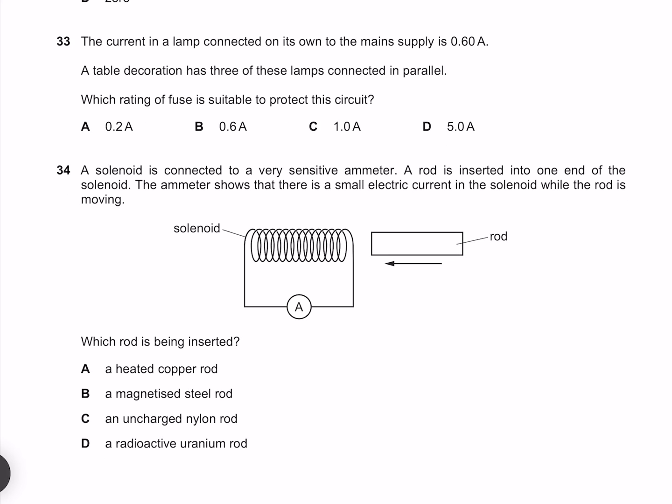The current in a lamp connected on its own to the main supply is 0.6 amps. A table decoration has three of these lamps connected in parallel. Which rating of fuse is suitable to protect this circuit? Three of these lamps in parallel is going to draw three times our 0.6 amps, which is 1.8 amps. Which means that these ones are too small, leaving us with our option D.